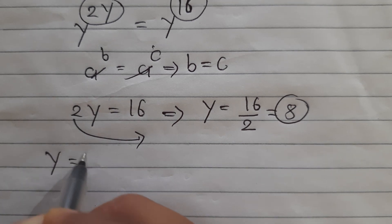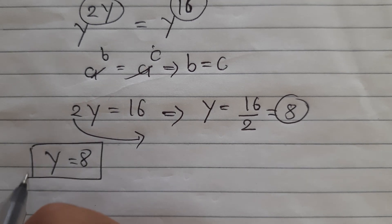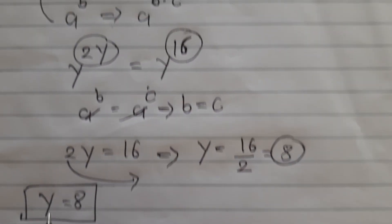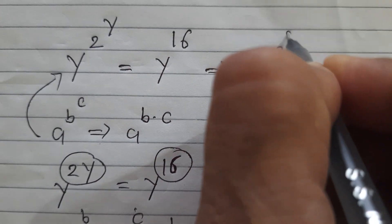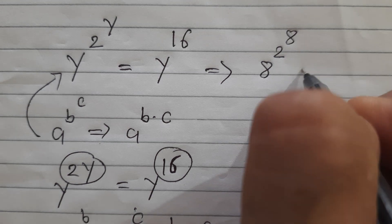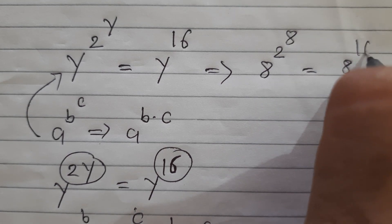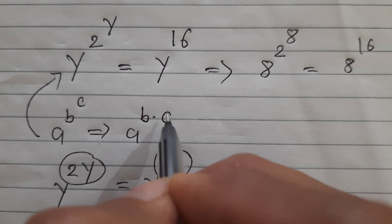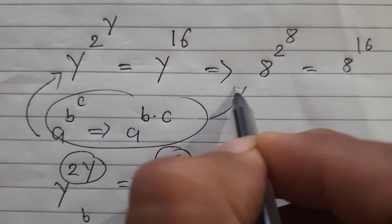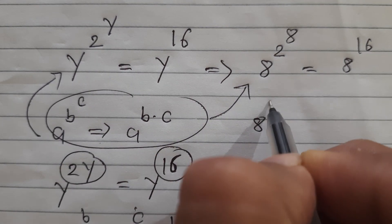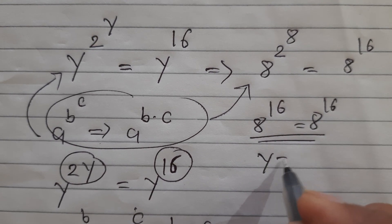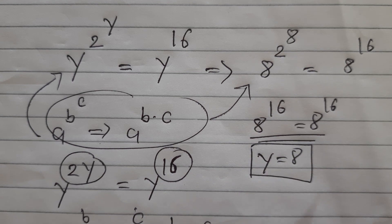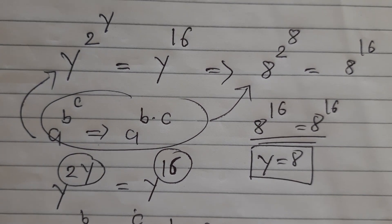So y is equal to 16 divided by 2, which is 8. This is the first answer: y equals 8. If we put y equals 8 in the original statement, then 8 to the power of 2 to the power 8 equals 8 raised to 16. Applying the same rule, 8 raised to 16 equals 8 raised to 16. So y equals 8 is correct.